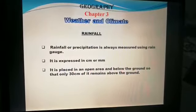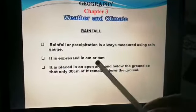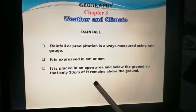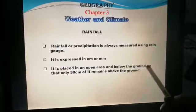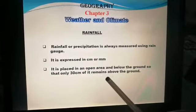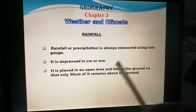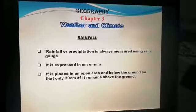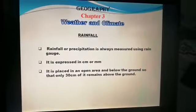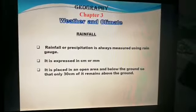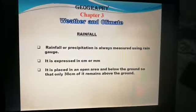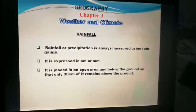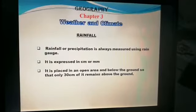Rainfall or precipitation is always measured using a rain gauge. It is expressed in centimeters or millimeters. It is placed in an open area, with only 30 centimeters remaining above the ground. It is placed in an open area so that splashes of water do not cause the rain gauge to collect extra water, and placed low so that it prevents evaporation of water.